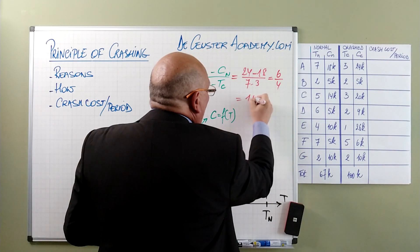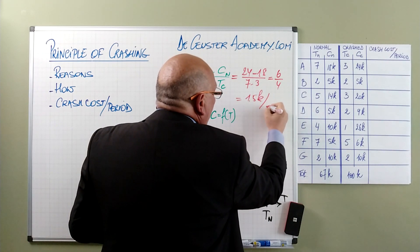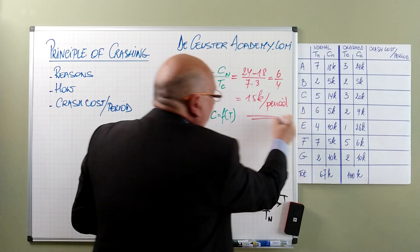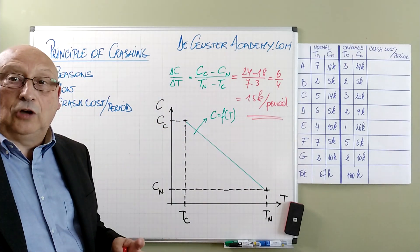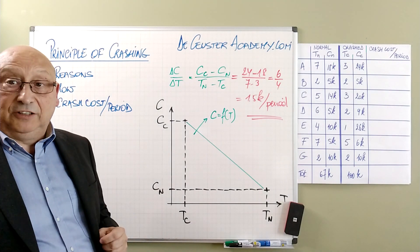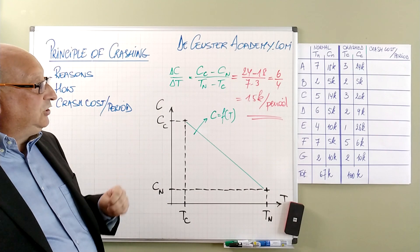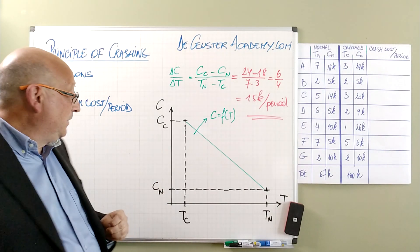Which gives us 1.5K per period. So that's the first calculation that we have to complete to see what's happening with those activities. That's what activity A. Let's have a look at the special case of activity B.